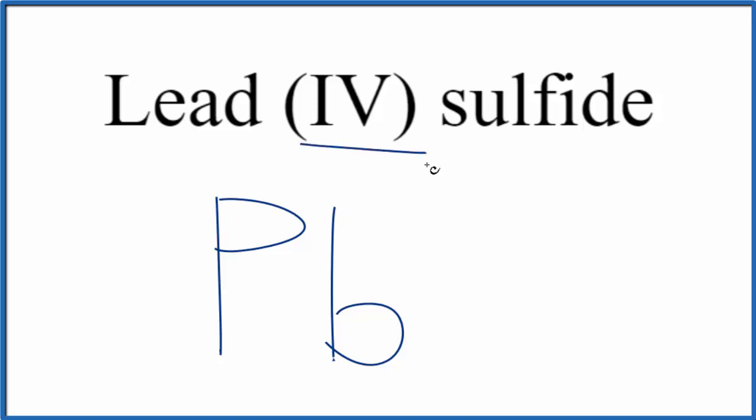Then this 4 here, that tells us it's going to be Pb4+, since lead is a transition metal. The Roman numeral here tells us that lead will be 4+.